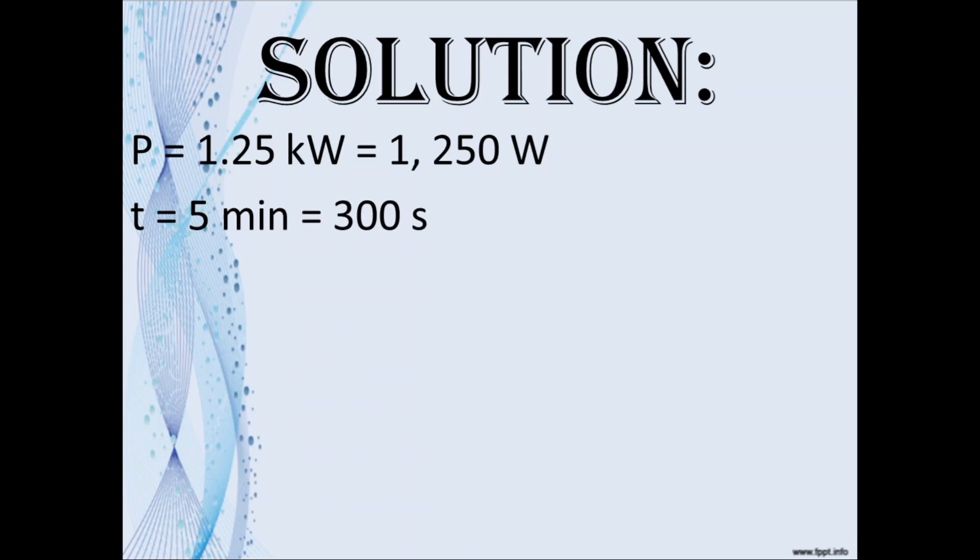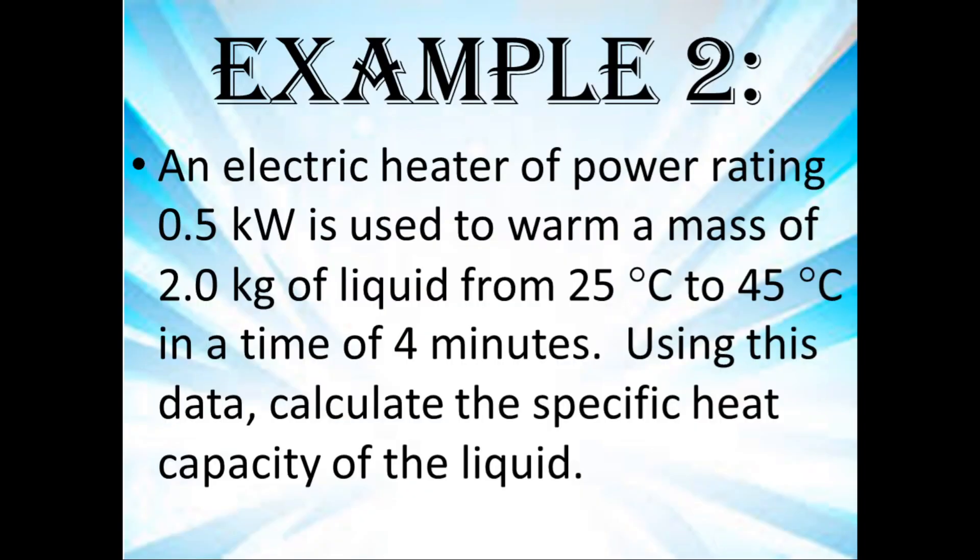So 5 times 60 gives us 300 seconds. Remember that power is equal to energy divided by time, which rearranged would be energy is equal to power multiplied by time. So the energy would be 1,250 watts multiplied by 300 seconds, which would give you 375,000 joules.